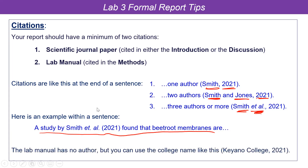The second citation is the lab manual, placed in your methods section — usually as the first sentence. Something like: 'The detailed procedure can be found in the Biology 107 lab manual.' Since there's no author, we use the college as the author: Keanu College, then the year — 2022, though I need to update that. That's how I want you to do the citations.